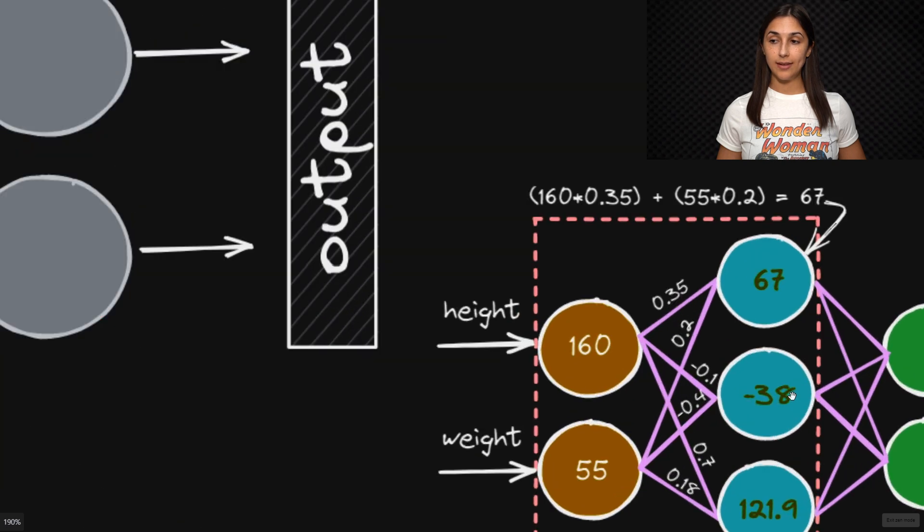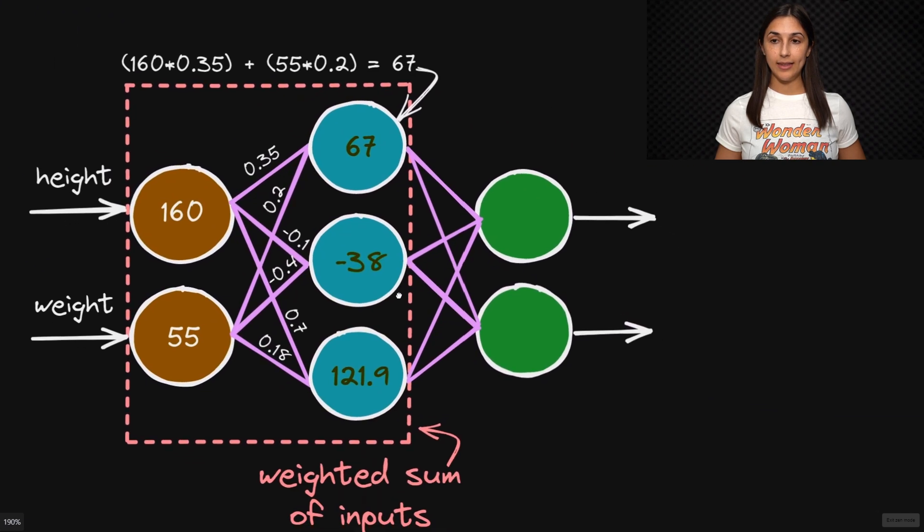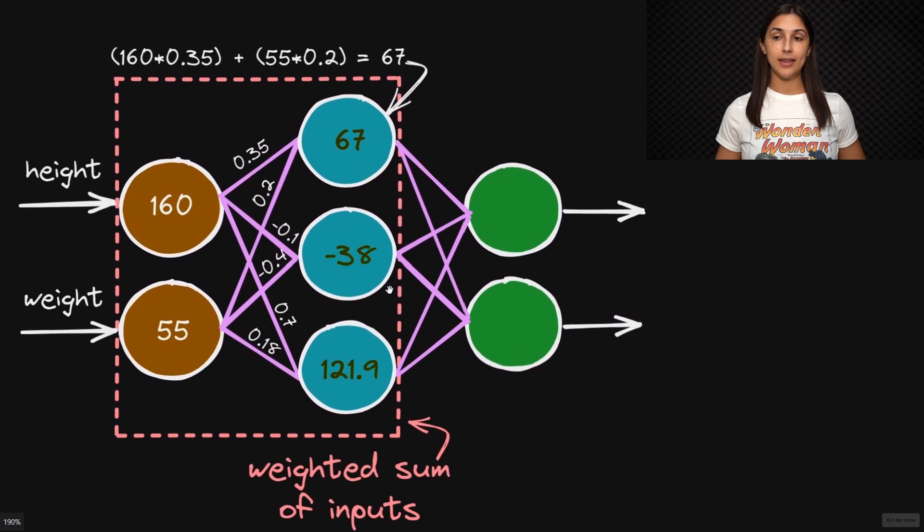We can zoom in on this example to see how exactly the weights affect the output of given nodes present within a hidden layer. In this example, we are passing the height and weight of individuals as input to the input layer.